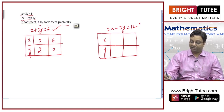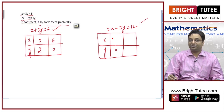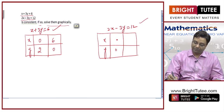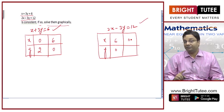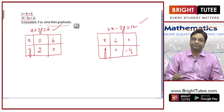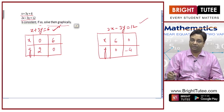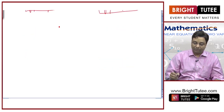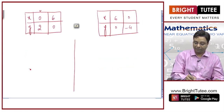Now look at the second equation. If I put y equal to 0, 2x equals 12, hence x equals 6. And if I put x equal to 0, then minus 3y equals 12, hence y equals minus 4. So I have got two points each for the first and second equations, and now I can draw the graph of the pair of linear equations.